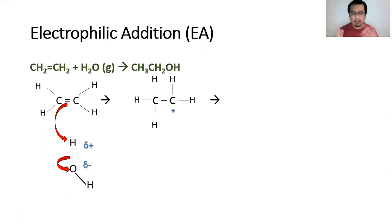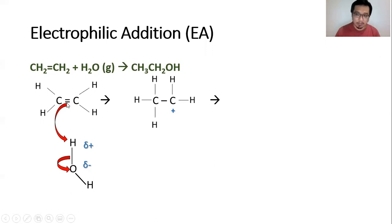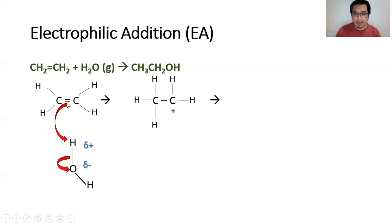You are expecting to get a carbocation as the intermediate. A carbocation is a species with a carbon bearing a positive charge. Initially, these two carbons shared one electron to form the pi bond; however, during the mechanism, these two electrons are used to form the carbon-to-hydrogen bond. Therefore, this carbon on the right is now short of one electron, which is why it is positively charged.